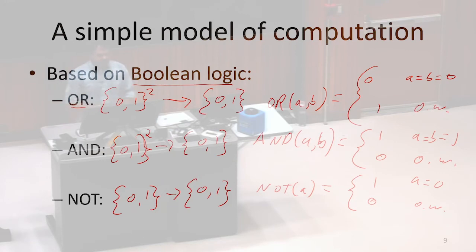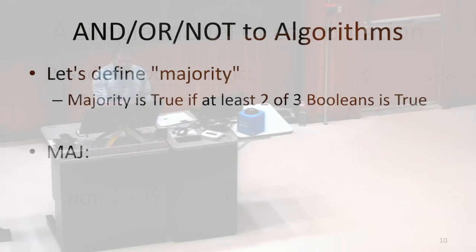And what we're going to do is we're going to use and, or, and not in order to write some algorithms. And in particular, we're going to use and, or, and not to write an algorithm for this function majority.